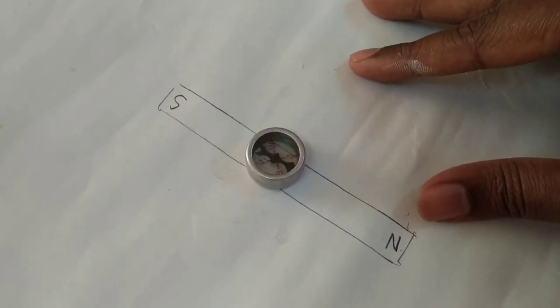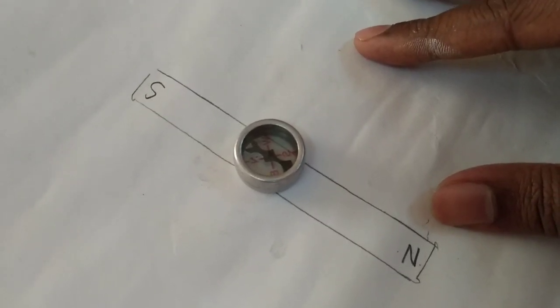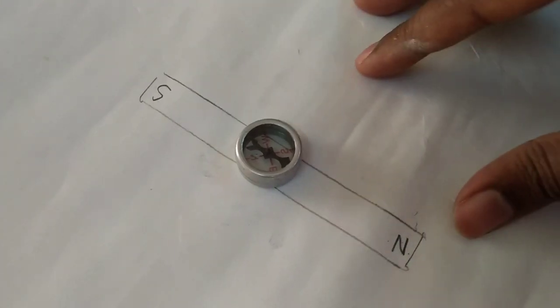Now you can see that the compass needle and the lines of the traced line both are parallel with each other. This is our position of drawing.